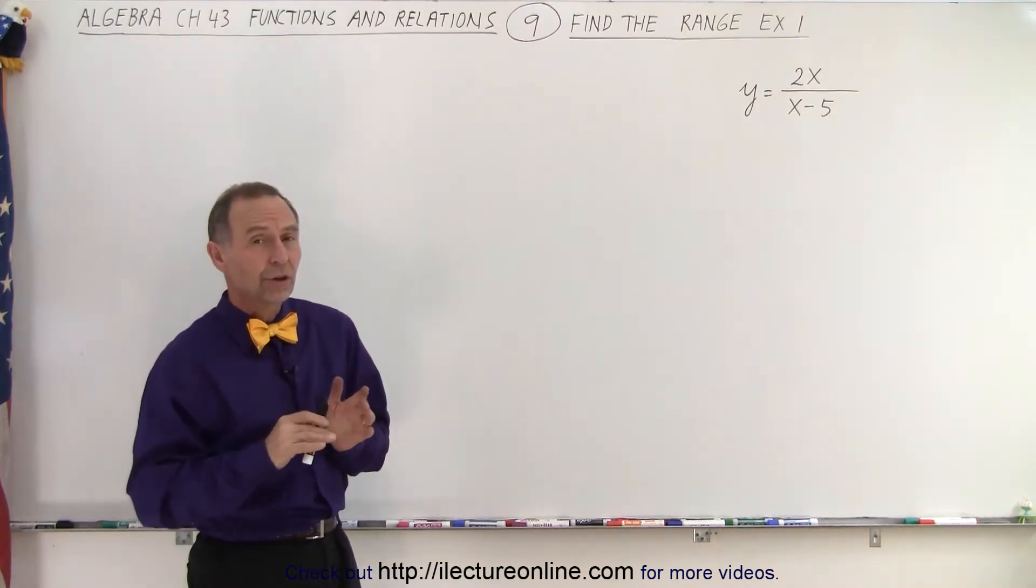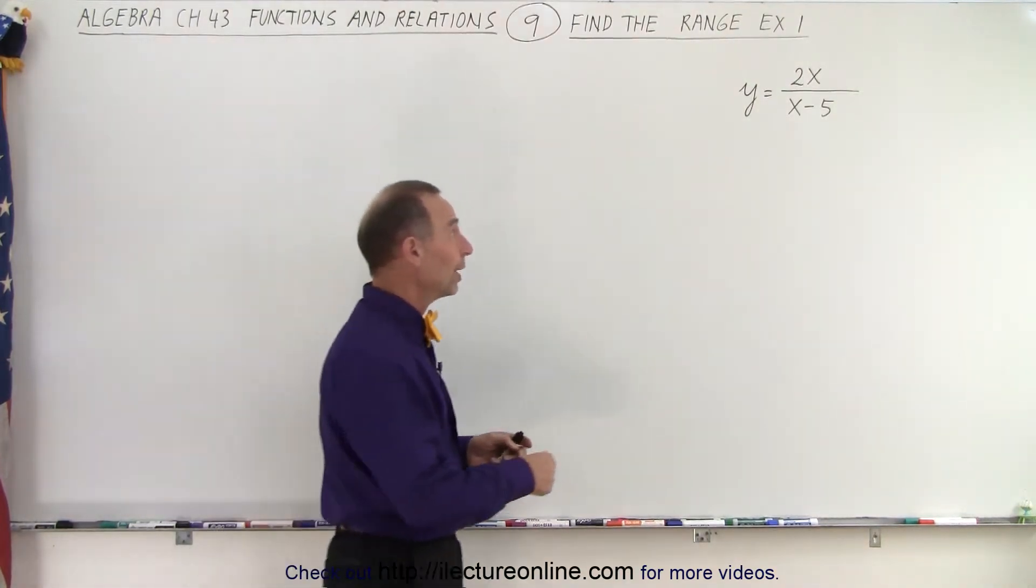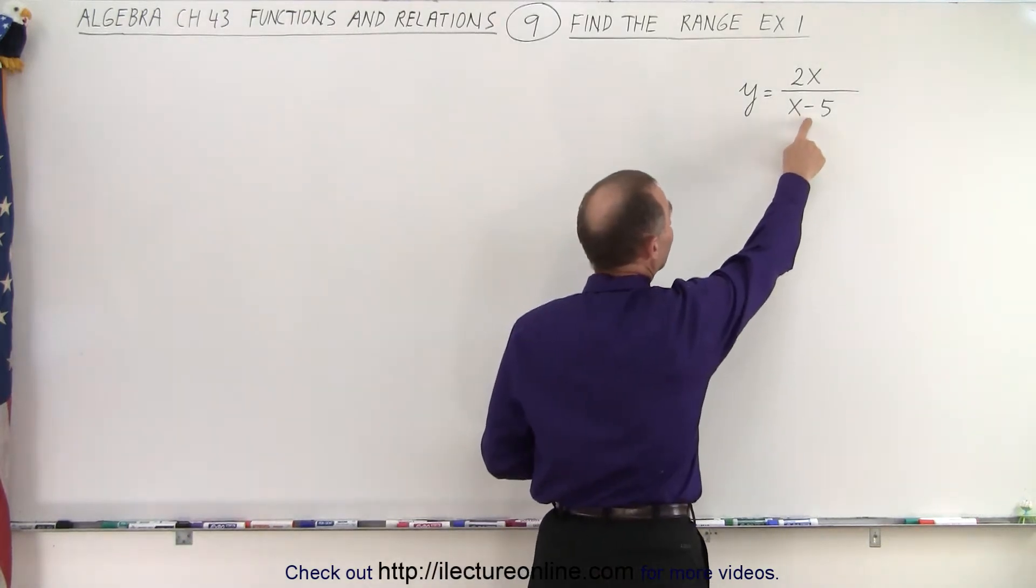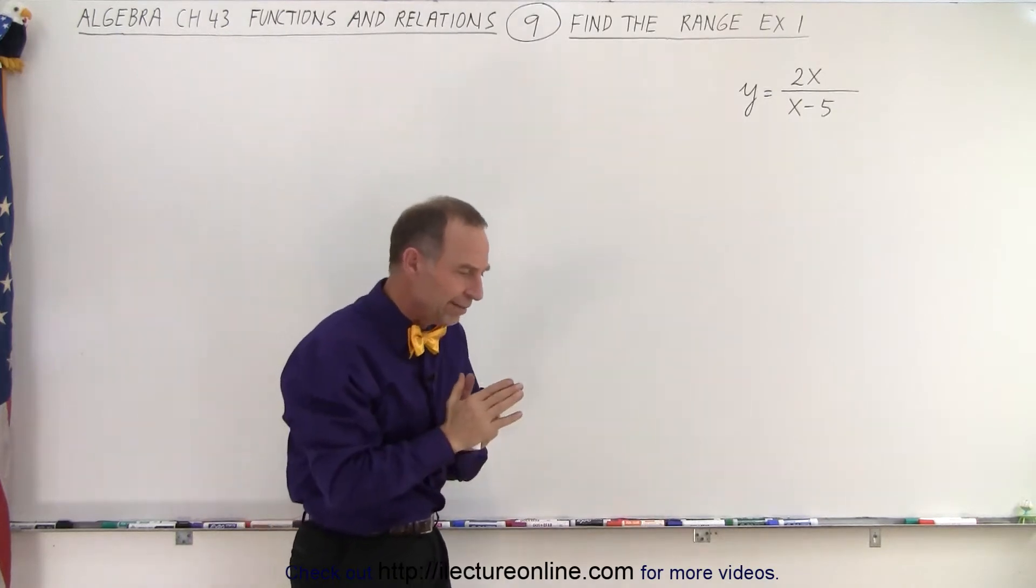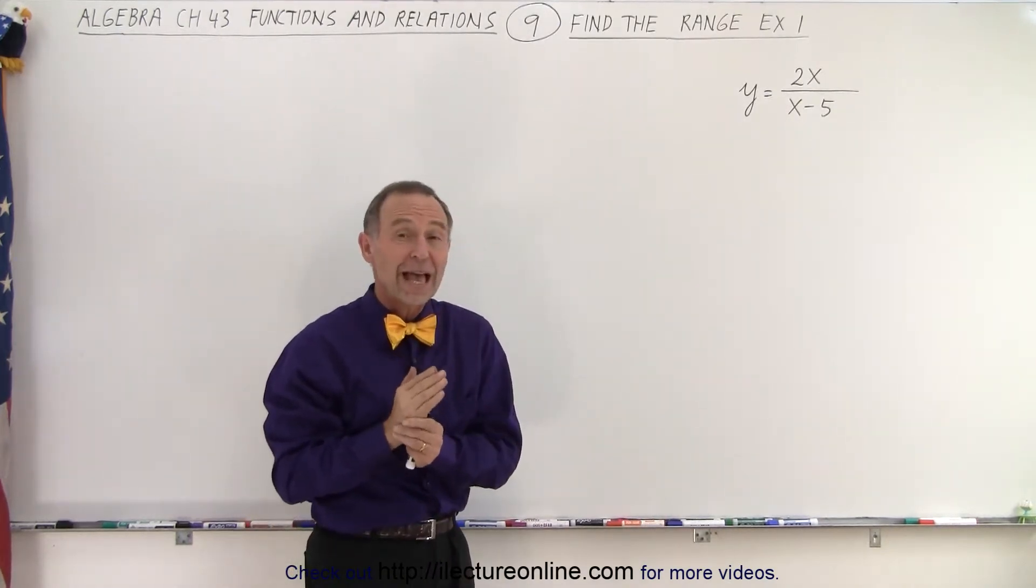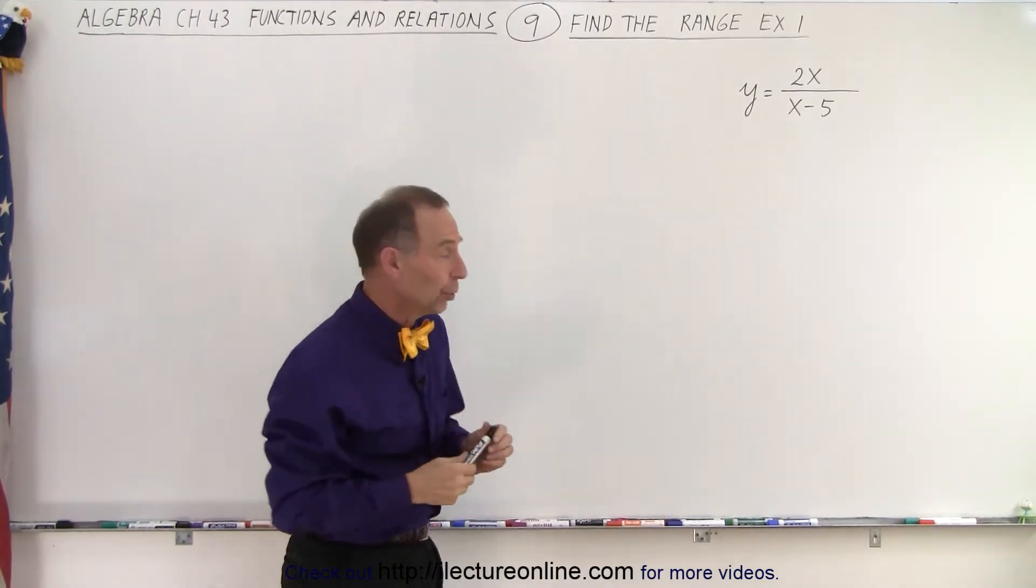Of course, as far as the domain is concerned, you can right away tell that x cannot equal 5 because 5 minus 5 is 0, which gives you a 0 denominator, which means that at x equals 5 we have what we call a vertical asymptote.